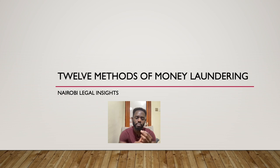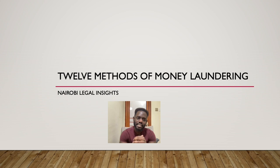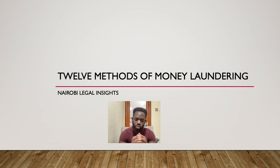Laundered money could come from drugs, corruption, or piracy. Once a criminal has a lot of stolen money from these activities, the next step is how do you actually clean this money so that it enters the legitimate economy and appears as legitimate income. So in this video, let us explore the 12 methods of money laundering.